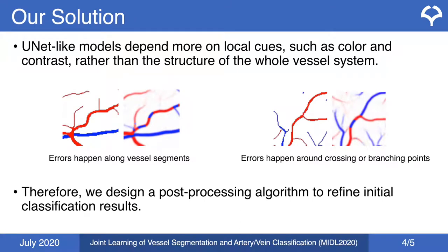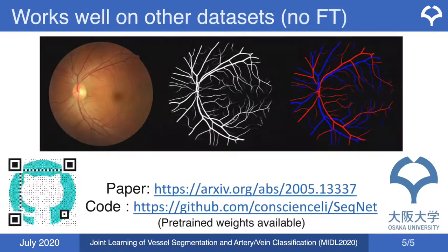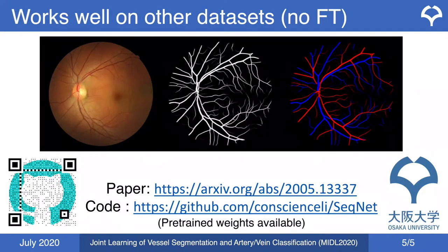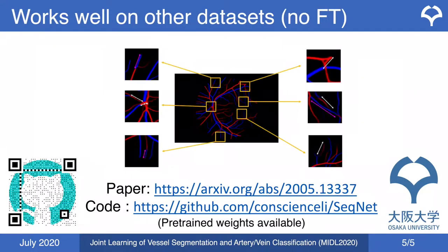In the second part, we divide the vessel map into keypoints and segments. After that, we perform our post-processing method to refine results. Our post-processing method aims to solve inter-segment and intra-segment errors. We experiment on two datasets and achieve high AUC and accuracy.